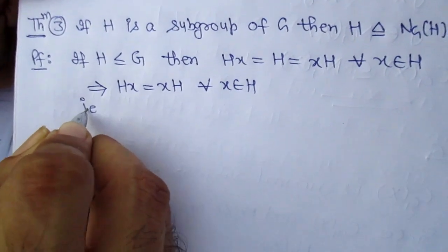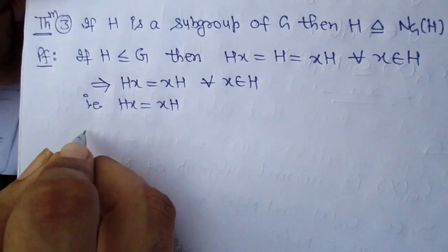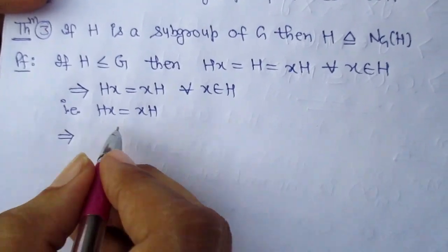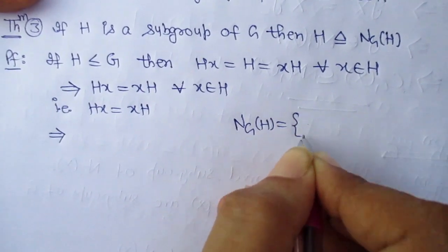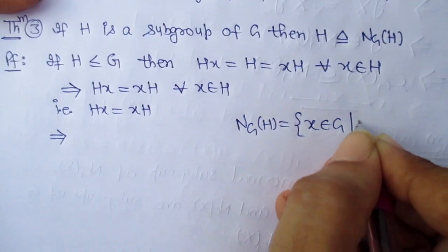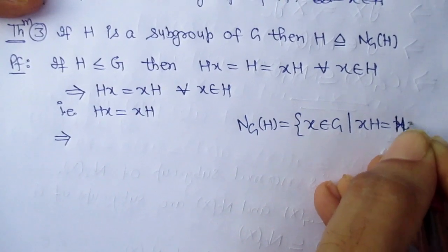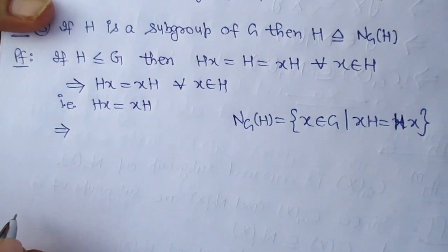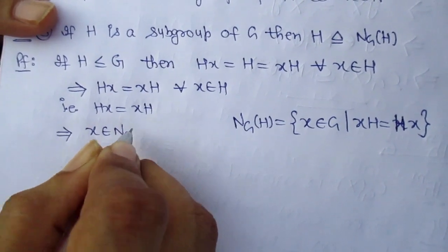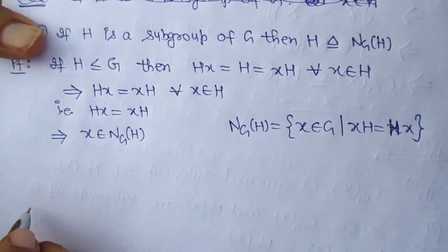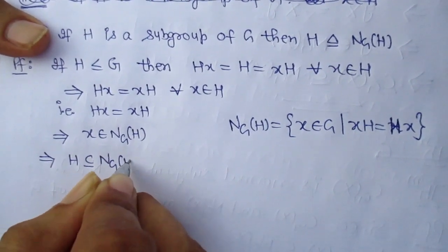That is, HX is equal to XH. It implies HX is equal to XH for all x belonging to H. It implies H is a subset of N_G(H).